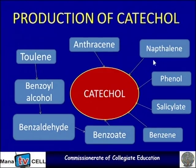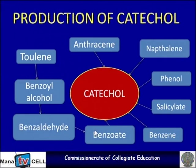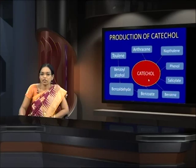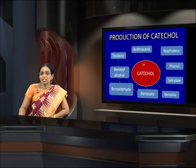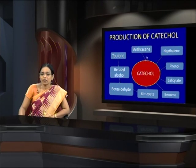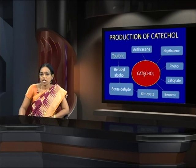Looking at this diagram for procatechol: toluene is degraded first to benzyl alcohol, then to benzaldehyde, then to benzoate, and this benzoate is converted to catechol. Anthracene is directly converted through a sequence of reactions to catechol.